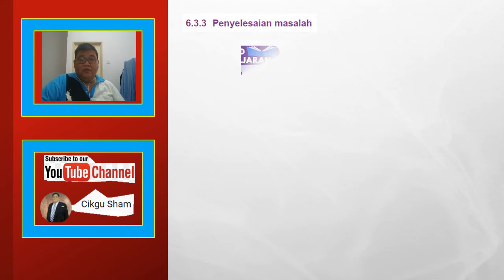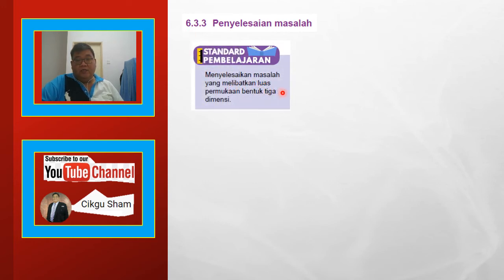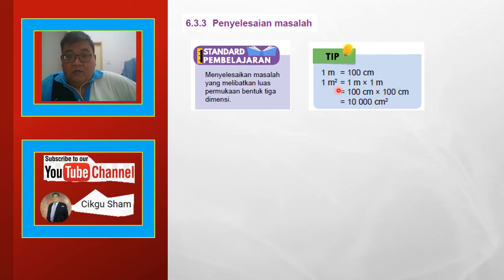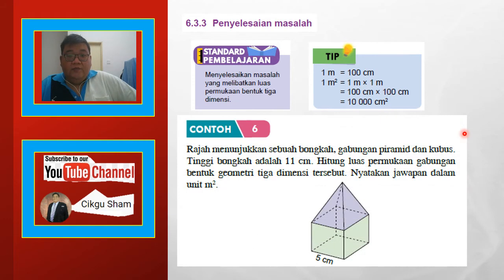6.3.3 penyelesaian masalah — setelah pembelajaran ini kita akan selesaikan masalah yang melibatkan luas permukaan bentuk 3 dimensi. Tip: 1 meter sama dengan 100 cm. Jadi 1 meter persegi = 100 × 100 = 10,000 cm persegi. Kena ingat tu.